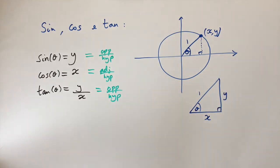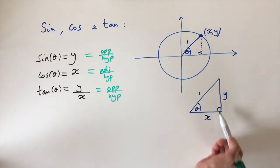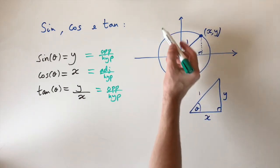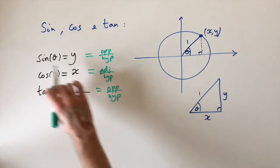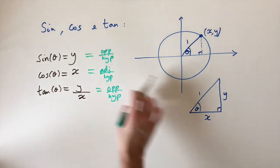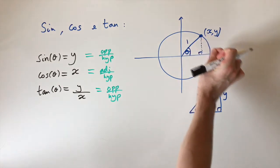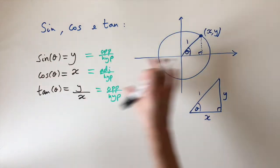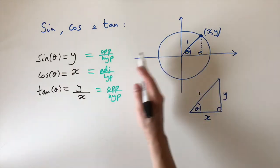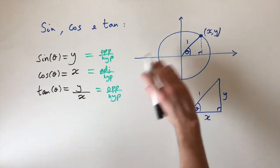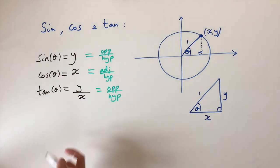The reason these definitions are more general is that they allow for negative lengths, which we can't have in a triangle. If the point is in the second quadrant, the value of x would be negative, so cosine could be negative. Similarly, if the coordinate is below the x-axis, sine — the y value — would be negative. To think about how these functions evolve, imagine moving the point around the circle. Sine is the vertical height and will oscillate between 1 and −1. Cosine is the horizontal width and also oscillates between 1 and −1, but slightly out of phase. Tan is the ratio of sine to cosine, so it behaves differently.